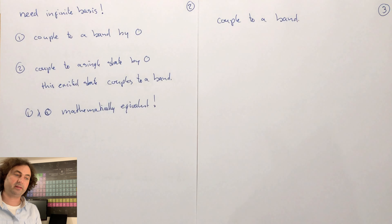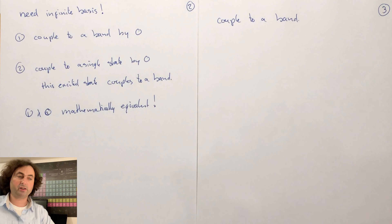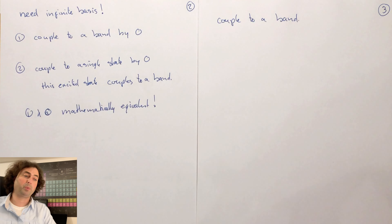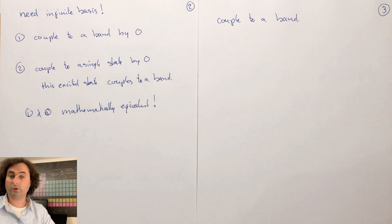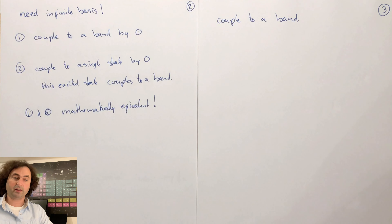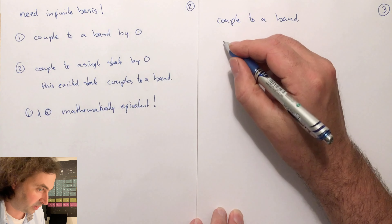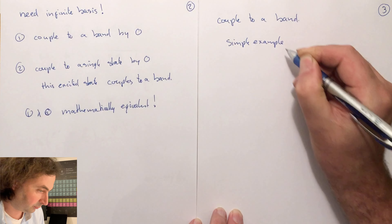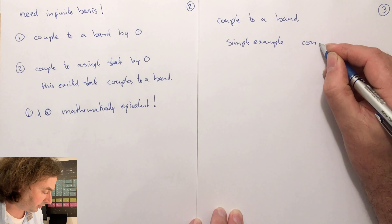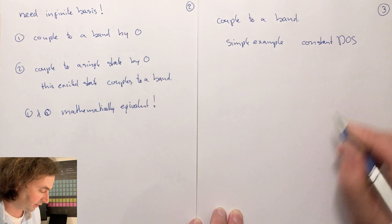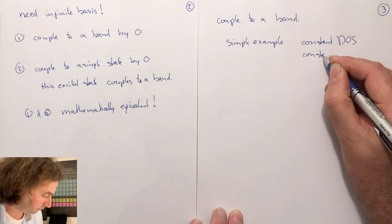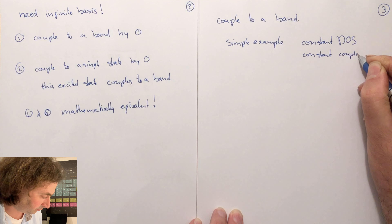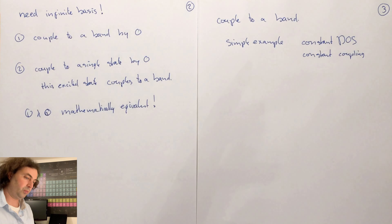Let's look at the first example where we couple to a band. When you couple to a band there is a minimum energy and a maximum energy of the band; you have some density of states in your system, and different states can have different coupling constants. I want to show you a simple model example where we get absorption, assuming a constant density of states and a constant coupling.